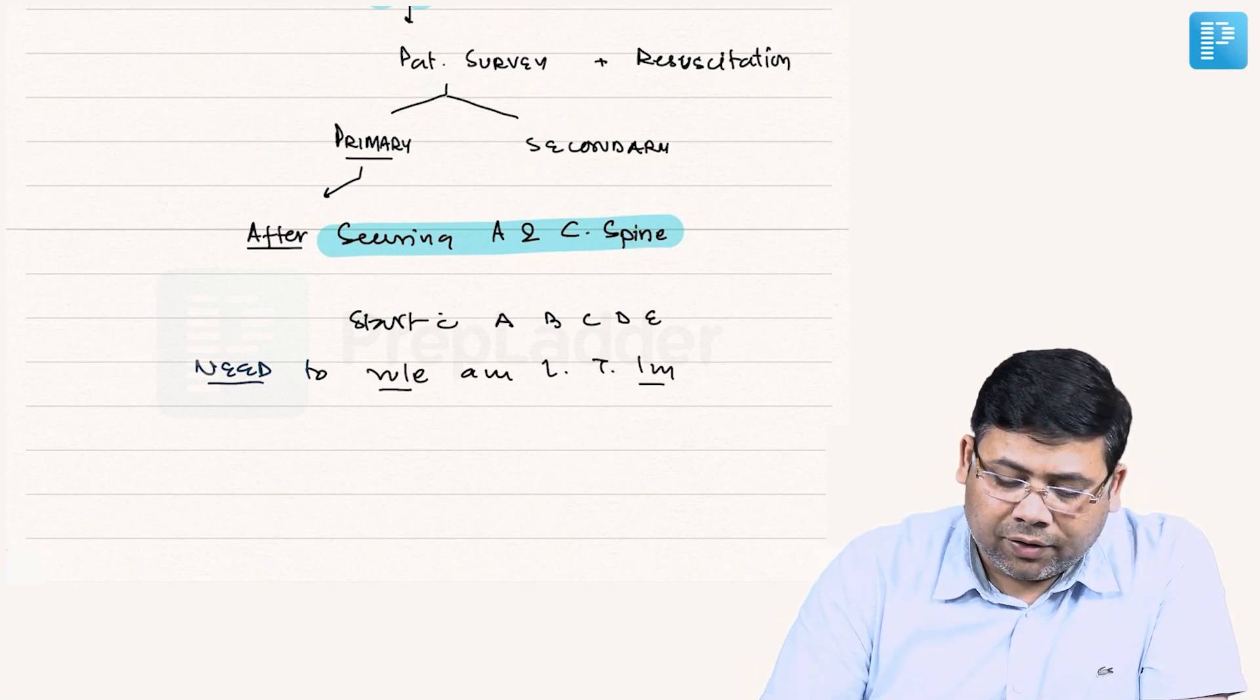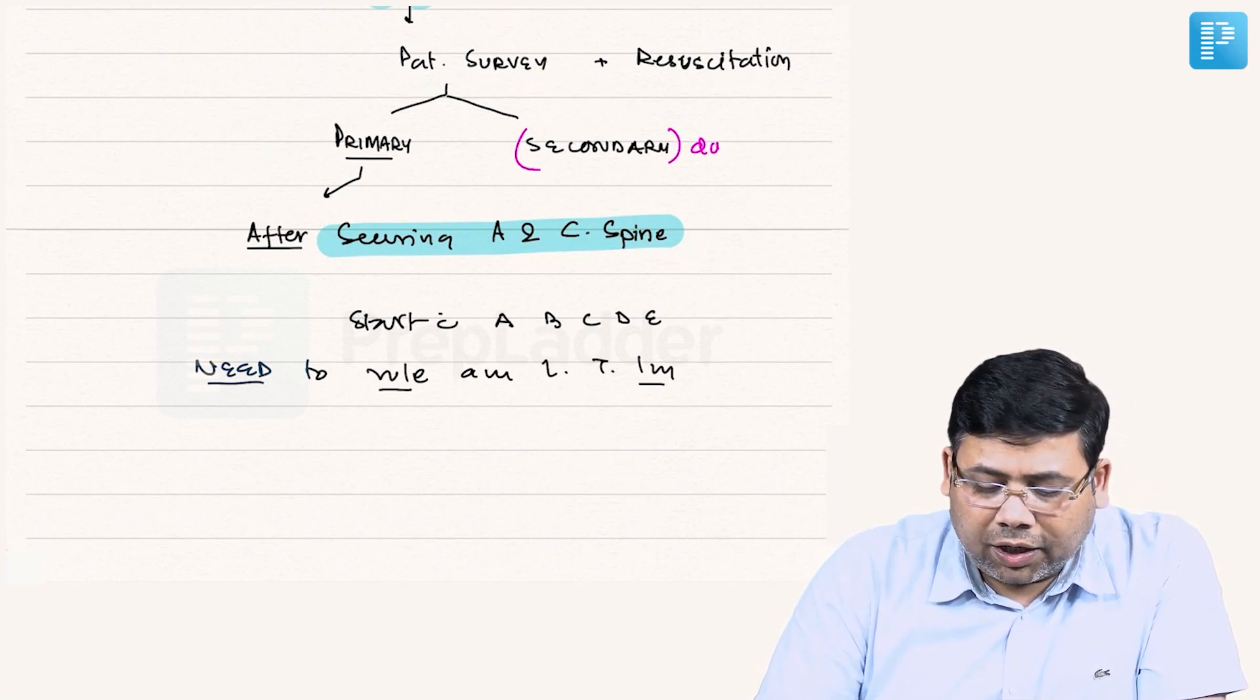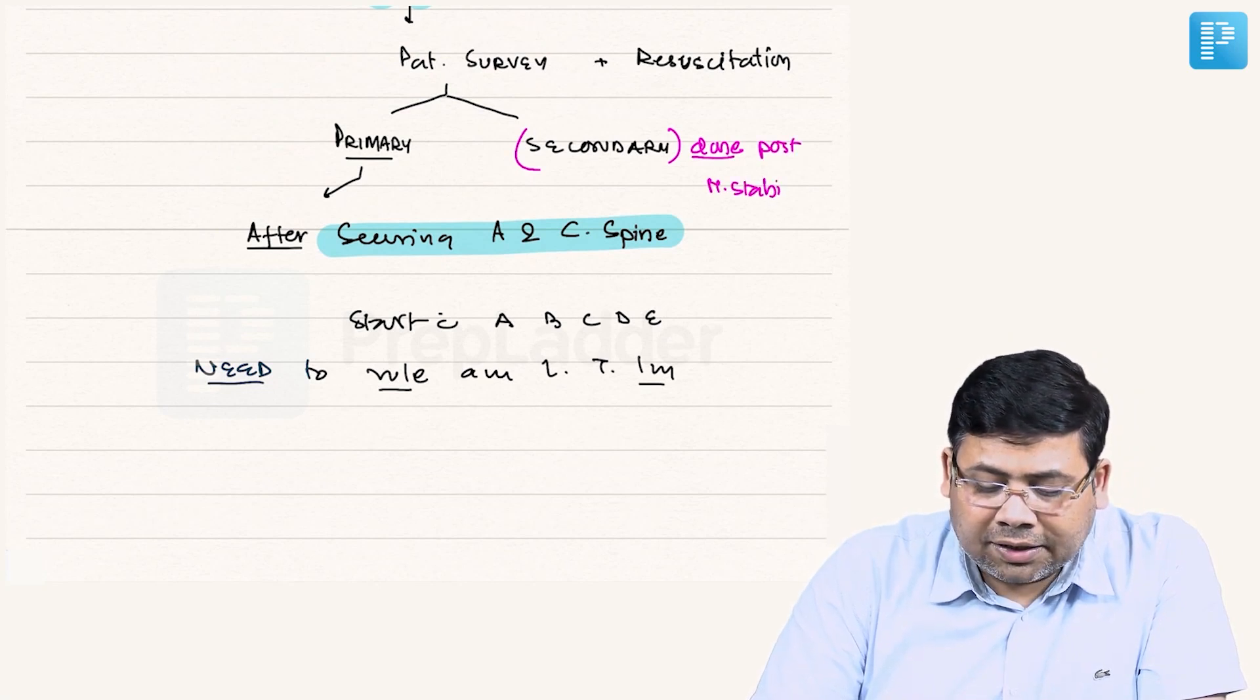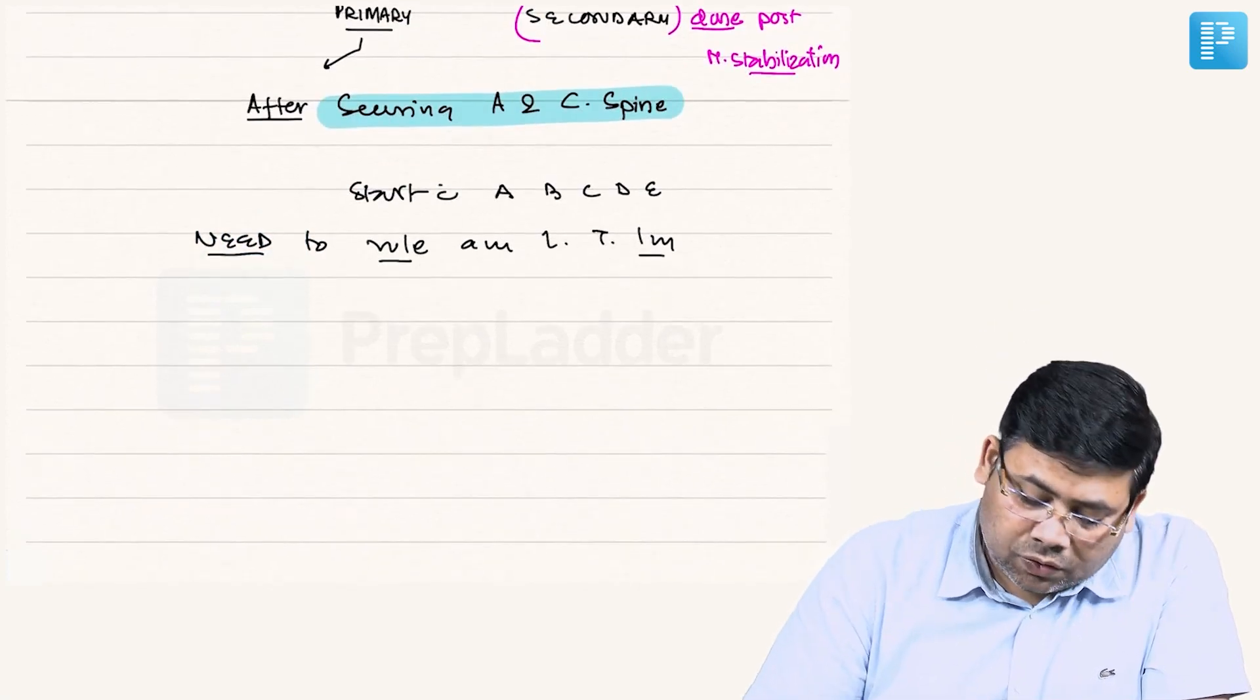What is the concept of secondary survey? This is done post hemodynamic stabilization. Why is it done post hemodynamic stabilization? The logic is that we want to furnish information which can modify the outcome.